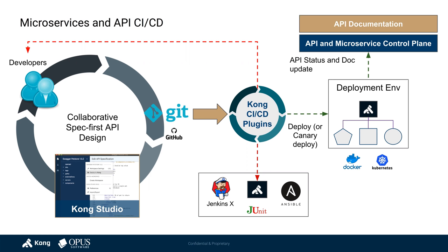Because you're using GitHub, it can fire your CI/CD process in the background. This integrates with your pipeline management infrastructure — for instance, based on Jenkins or Jenkins X for Kubernetes, Ansible for provisioning, JUnit for testing, and so on. At the end of the process, you deploy not just the APIs themselves but also the microservices against your deployment environments — running in Docker or Kubernetes as you wish.